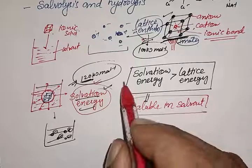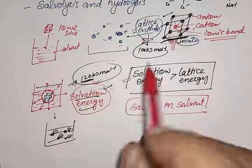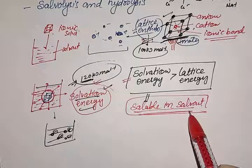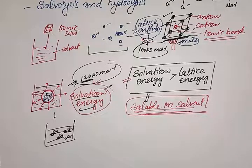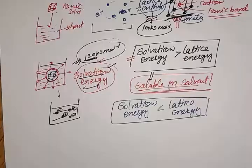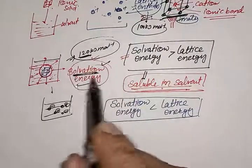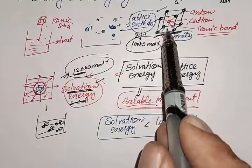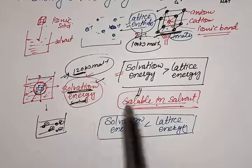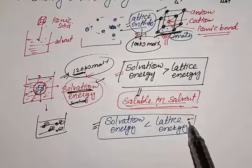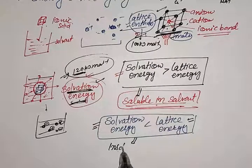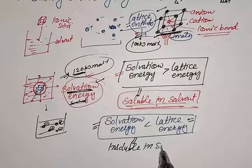To summarize: if the solvation energy is more than the lattice energy, the ionic compound will be soluble in the particular solvent. In the second case, if the solvation energy is not good enough to break the lattice — that is, if solvation energy is less than the lattice energy — the ionic compound will be insoluble in that solvent.